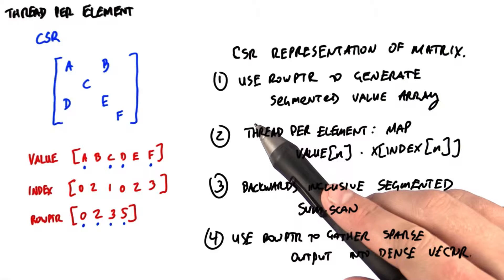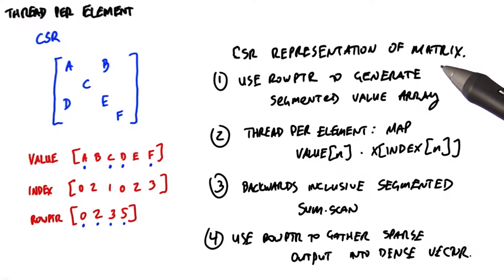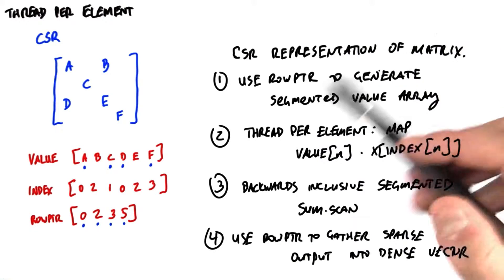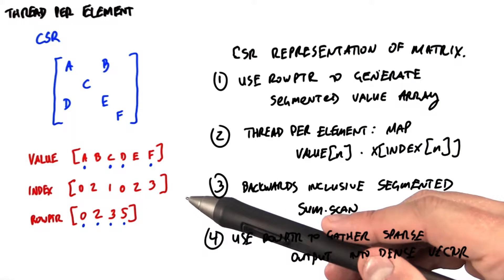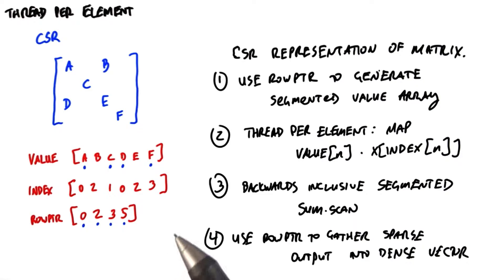Let's look at this approach step by step so that we can understand it. We're going to start with the CSR representation of the matrix. Step one, we're going to use the row pointer data structure to generate an array with ones for segment heads and zeros for non-segment heads.